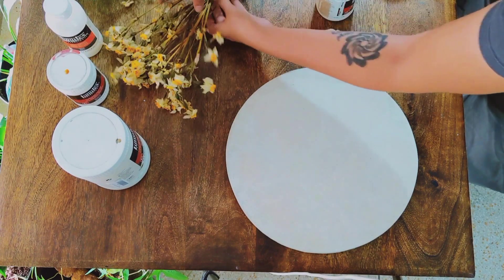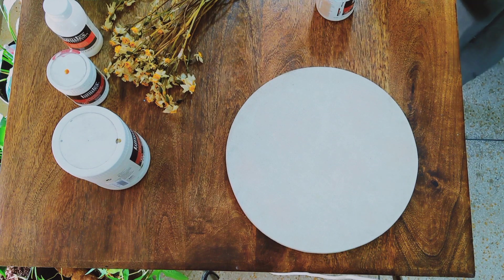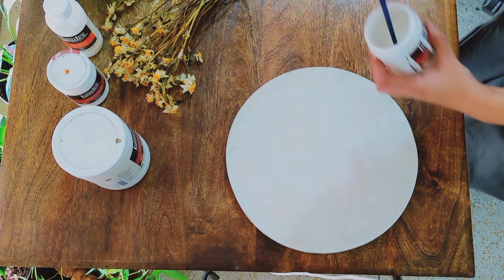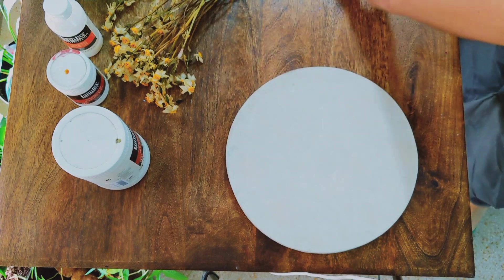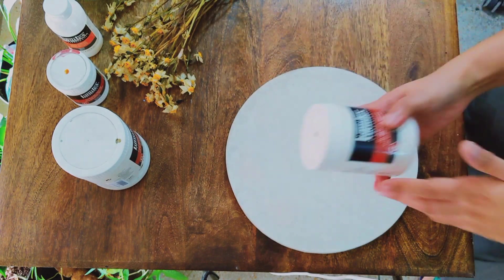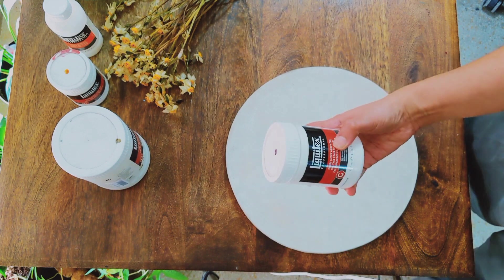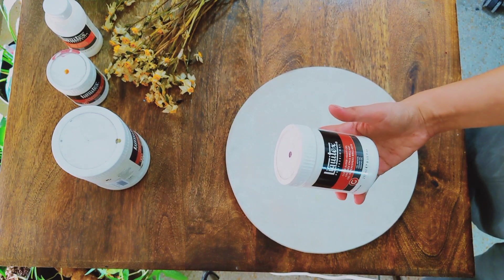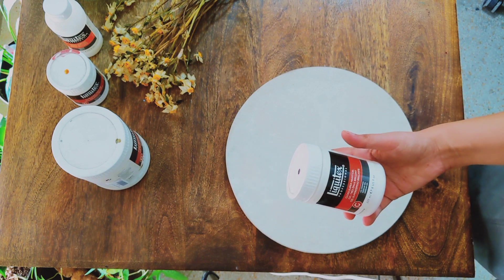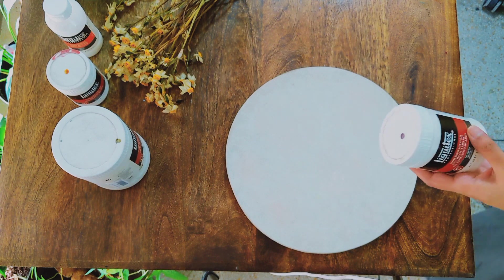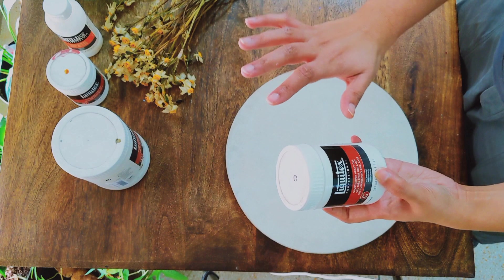What I had in mind was this Liquitex gloss super heavy gel. I know the bottle is a little smashed, I'll show you one that's not. This is a medium that you paint with, it gives you a transparent finish and you can make it really thick. The only problem is that it doesn't lay flat.